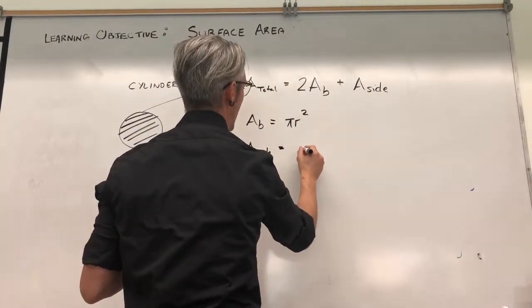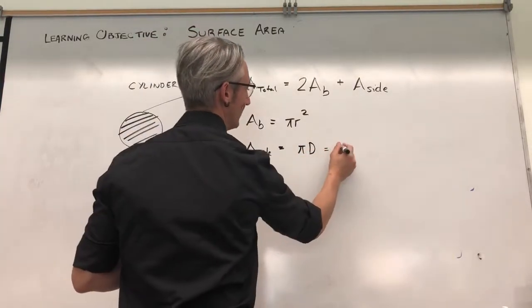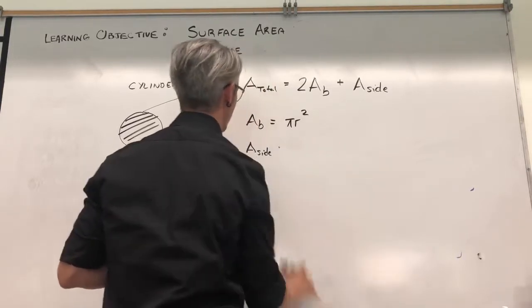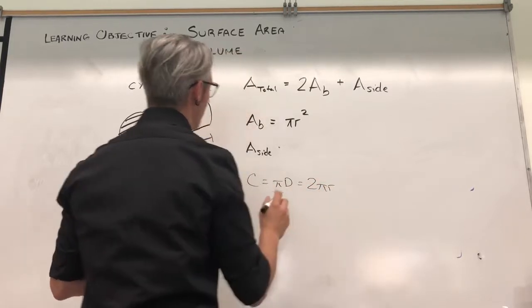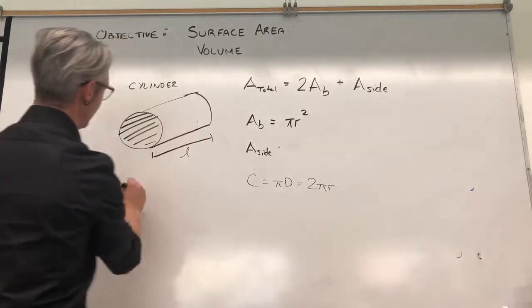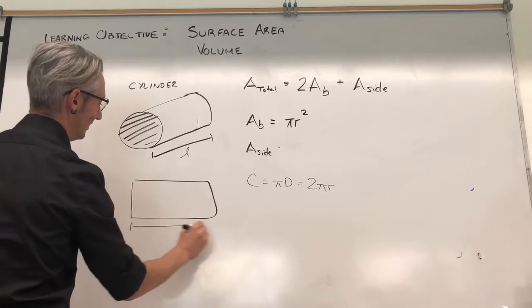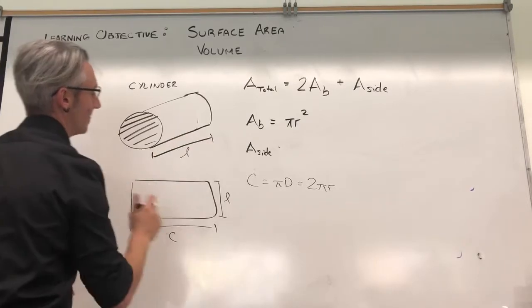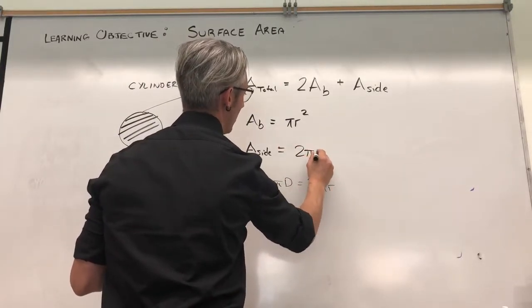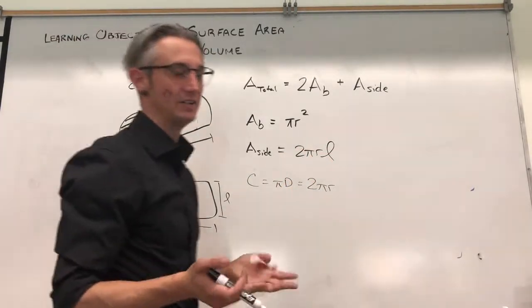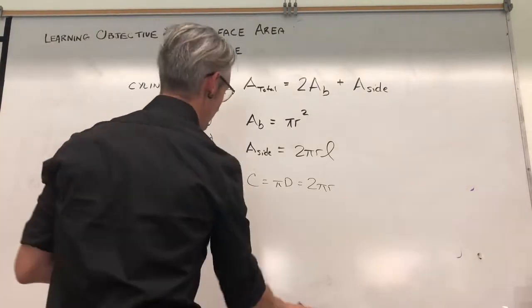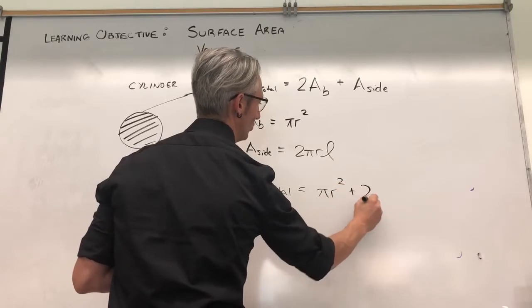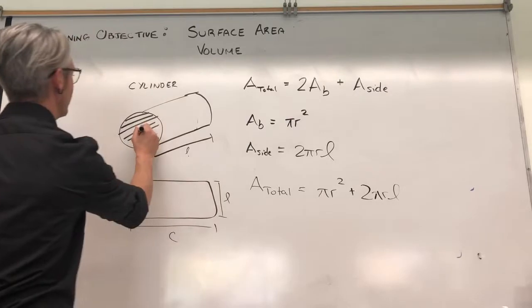Circumference is πd, and since d equals 2r, that's 2πr. But we also need to multiply by the length, because the unwrapped side is a rectangle — around is the circumference, and the other dimension is the length of the cylinder. So the area of the side is 2πr times the length. That means our total area is πr² plus 2πr times the length, where r is the radius — the distance from the middle to the edge of the circle.